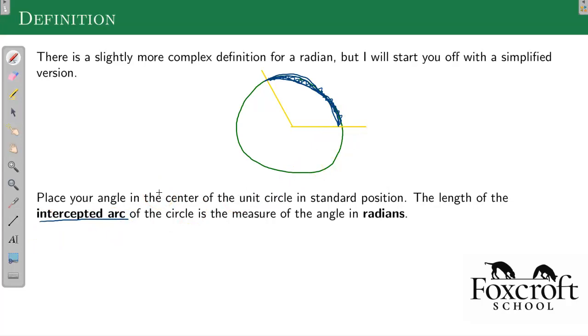This is another one of those things that that's the formal definition. You don't really need to know it's called the intercepted arc, but you have to know that this is what you're kind of measuring when you're finding an angle in radians. So we're relating it to a circumference of a circle rather than some made-up number 360.